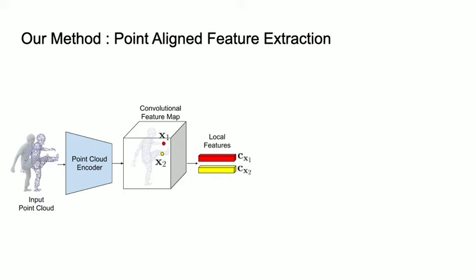Given a sparse point cloud of a dressed human as input, we first compute a convolutional feature map for the point cloud. For each query point, we can then extract local features on the feature map.